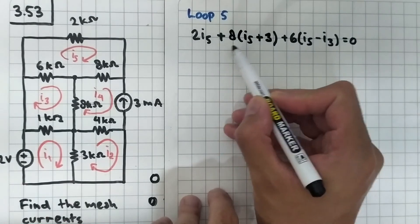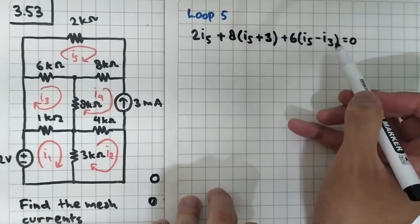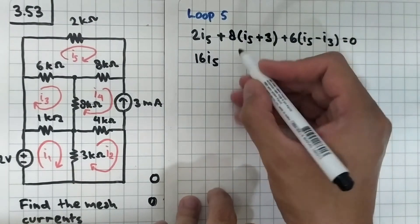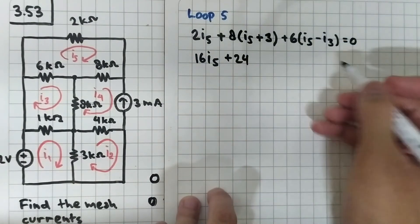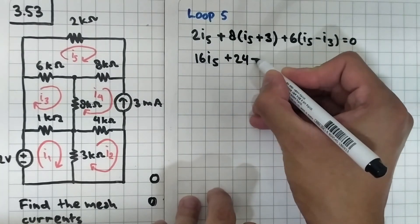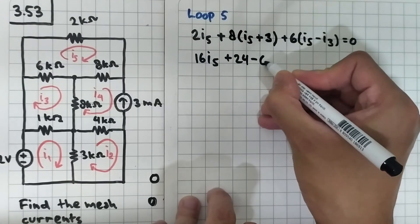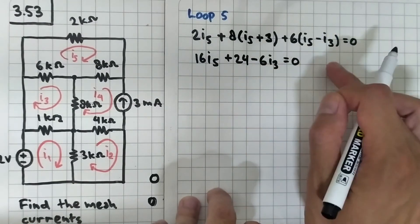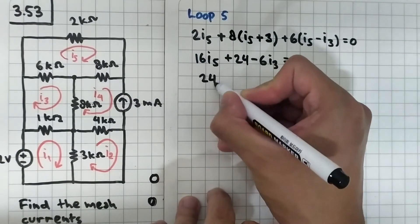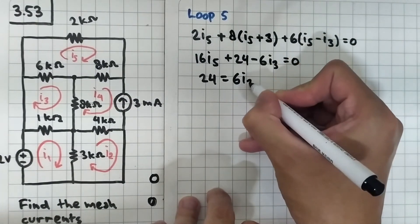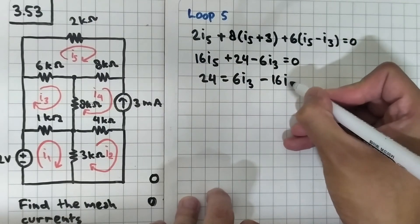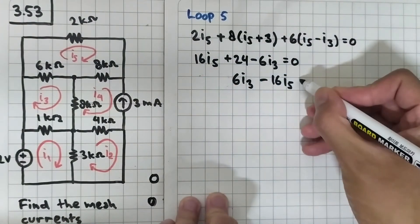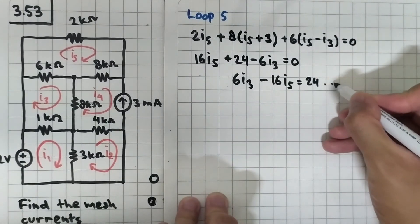For i5: 2 plus 8 plus 6 is 16, so we have 16i5. Eight times 3 is 24, and we have minus 6i3. That equals zero. Moving 24 to the right-hand side gives 6i3 minus 16i5 equals minus 24. This is equation number four.